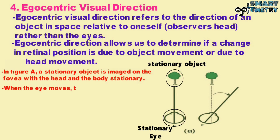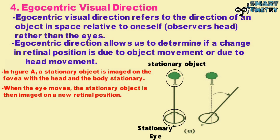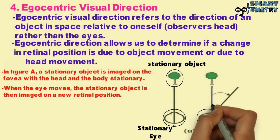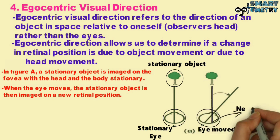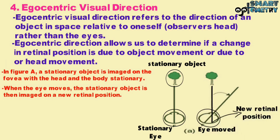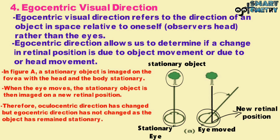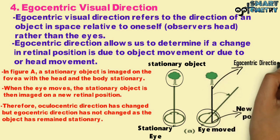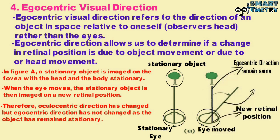When the eye moves, the stationary object is then imaged on a new retinal position. The eye has moved to a new position and the image of the stationary object is now focused on a new retinal position. Therefore, the oculocentric direction has changed but the egocentric direction has not changed, as the object has remained stationary. The egocentric direction of the object remains the same but the oculocentric direction has changed.